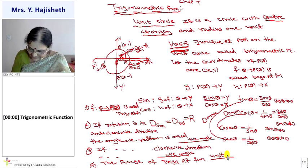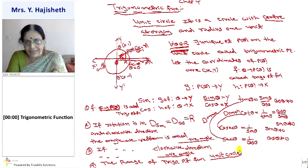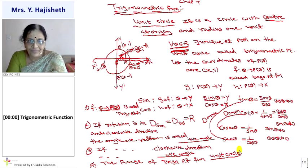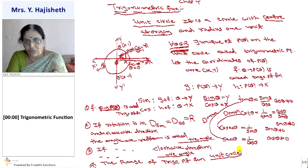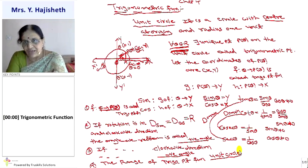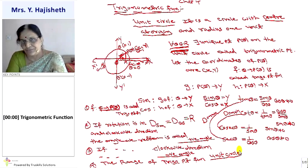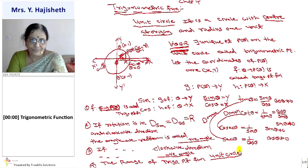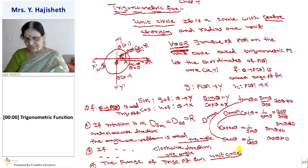From this discussion we discussed only the unit circle and the sine and cosine functions, and obtained four important objective questions of one mark each. Are you clear about what is the unit circle, what is the trigonometric point function, what is the sine function, what is the cosine function, and what are the tan, cot, cosec, and sec functions? All six are called trigonometric functions or trigonometric ratios — you can also call them ratios. Now we will start another concept.